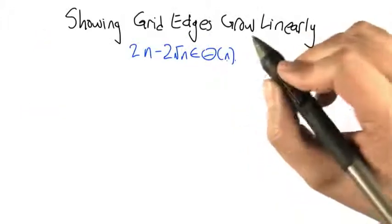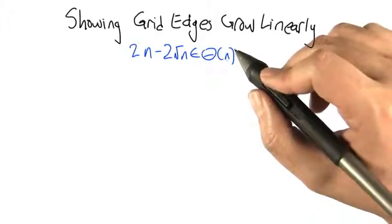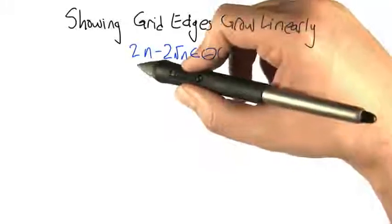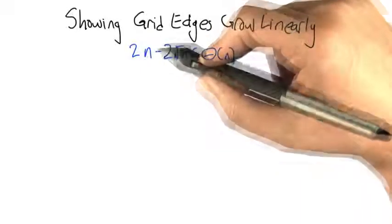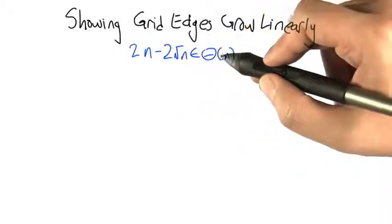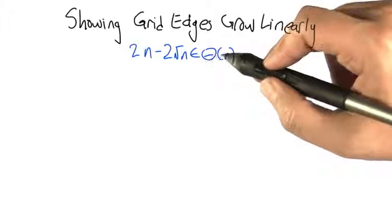Just to beat this dead horse a little bit longer, let's use the definition of big theta to show that this expression function that we determined for the growth in edges in a grid, 2n minus 2 times the square root of n, really is just a linear function. It grows like big theta of n.